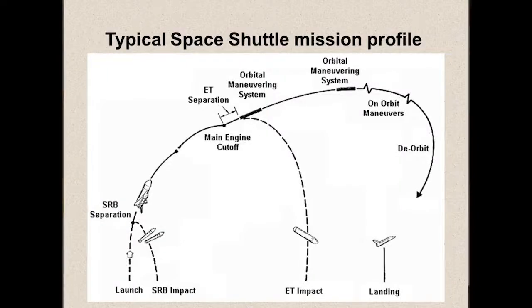Here's a little profile of the shuttle mission. You lift off and reach maximum dynamic pressure in about one minute at about 38,000 feet. SRB separation occurs at about two minutes — remember in the Challenger accident it happened at about 60 seconds. After SRB sep, the SRBs land by parachute. Then you have MECO — main engine cutoff — after the main engine burns for over eight minutes, taking all the propellant out of the big tank. At cutoff, you're within a few hundred feet per second of orbital velocity.